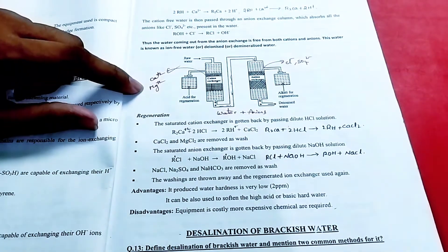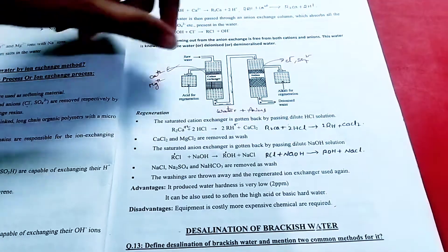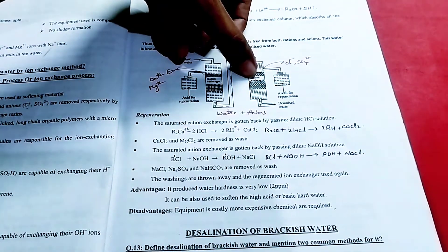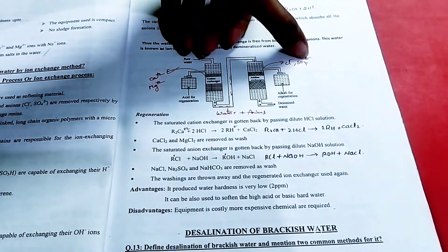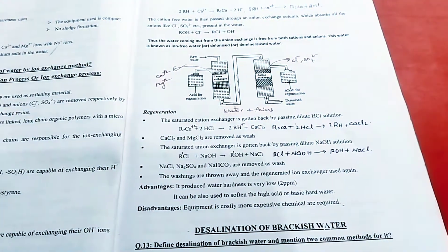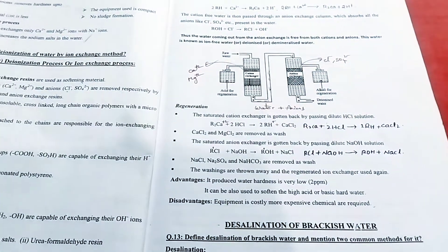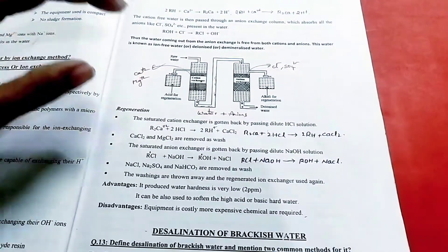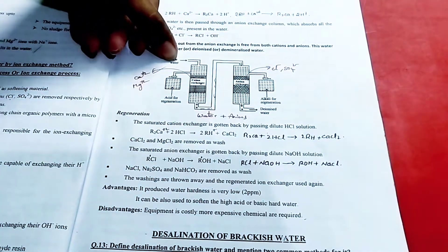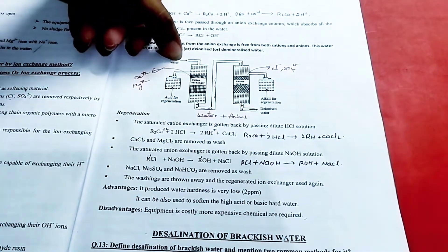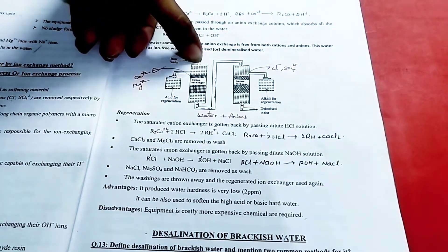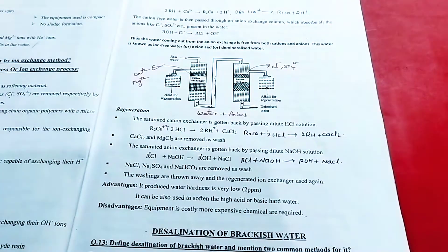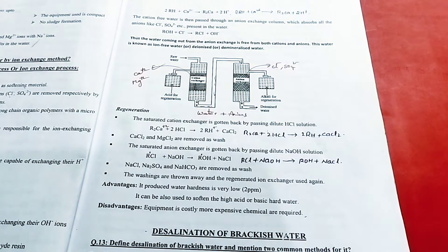You can see the material — Ca²⁺ and Mg²⁺. Let me show you the first process to explain. First, we pump the raw water. If we pump the raw water, we can separate it.